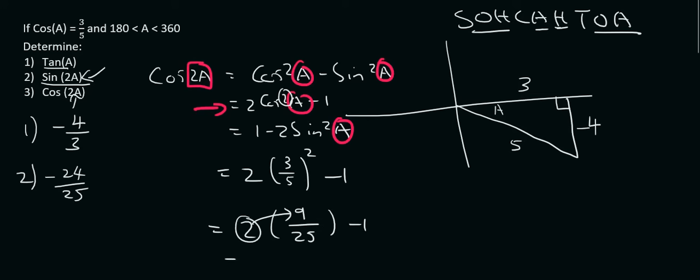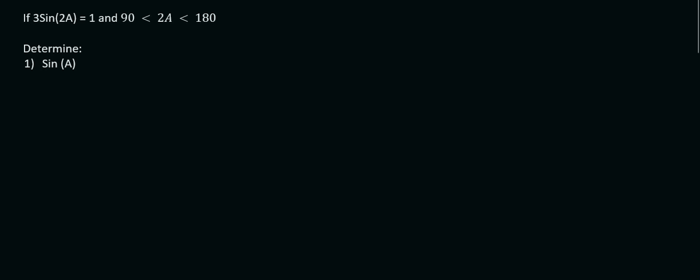I'm then going to multiply this 2, so that's going to give us 18 over 25 minus 1. I would then just chuck that in on the calculator, and that'll give us negative 7 over 25.